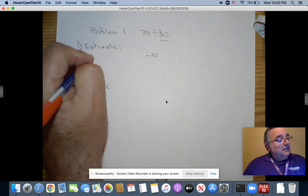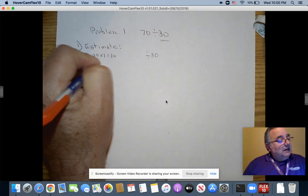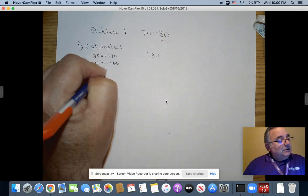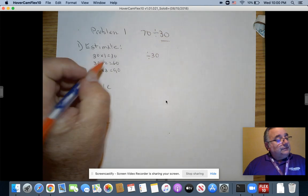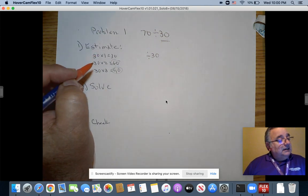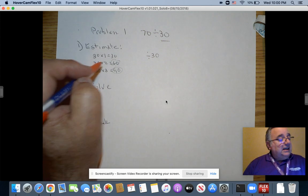Now I need to look at multiples of 30. So I can take 30 times 1 equals 30. 30 times 2 equals 60. And 30 times 3 equals 90. Hey, guess what? 70 is between 60 and 90.